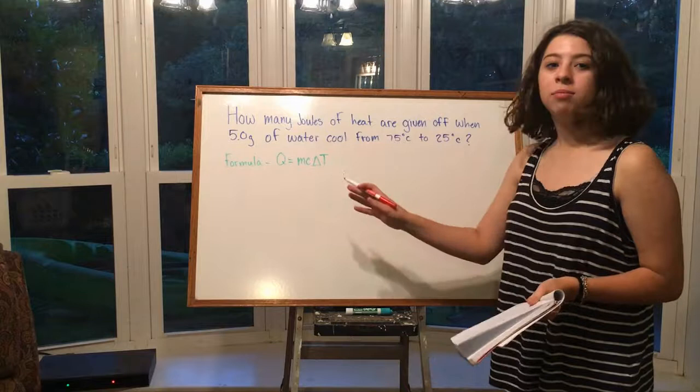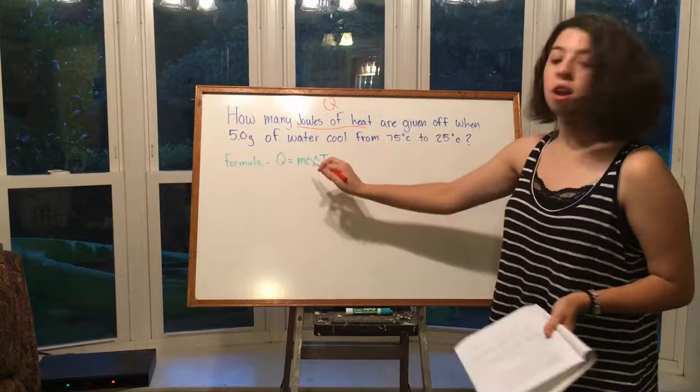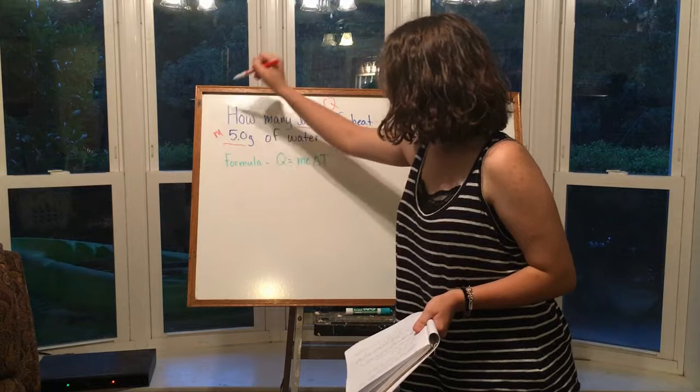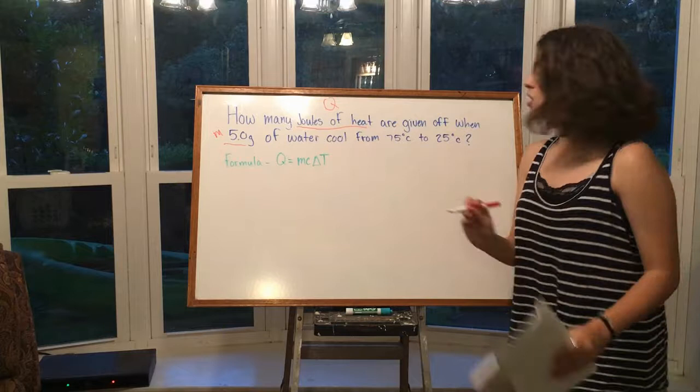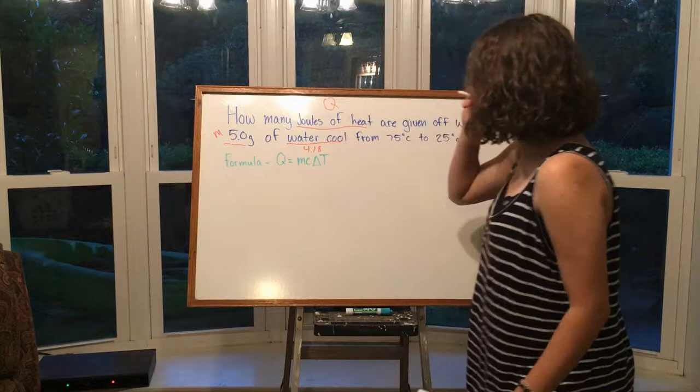Now we're going to do an example problem using Q = mcΔT. Q represents joules of heat, m is mass — which is 5.0 grams in this case — and c is specific heat. For water, the specific heat is always 4.18.